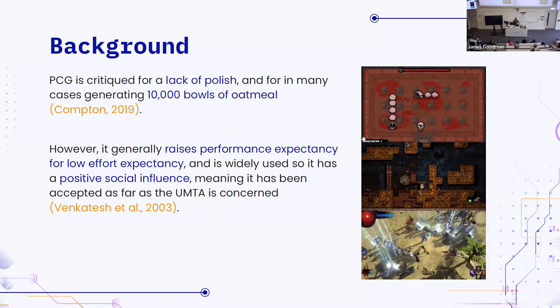PCG is critiqued for a lack of polish — generate 10,000 volts of oatmeal as we hear from Jeremy in all our modules. But generally, under UTAUT, it raises performance expectancy for a low effort expectancy, because you can find a thousand tutorials on PCG techniques on YouTube. The social influence is positive because people just use it so widely — and so it has been accepted.